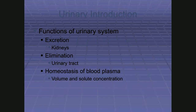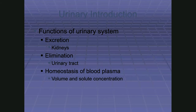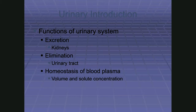Looking at general functions, the textbook lists them on page 955. First, excretion — removing waste from the body. Getting waste out of the bloodstream and into tubes connected to the outside means we've removed it from the bloodstream. Excretion is removal of waste from the cells and then from the bloodstream, which is what the kidneys do.